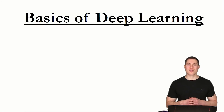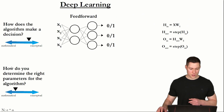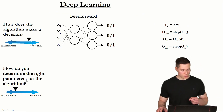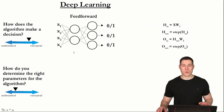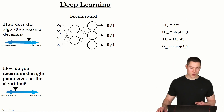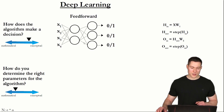Welcome to part nine of my basics of deep learning series. In the previous three videos, we answered the second question: how do you determine the right parameters for the algorithm? For the deep learning algorithm, the parameters are the weights, represented by those lines here. Determining the right parameters means finding weights such that the neural net is able to make correct predictions.